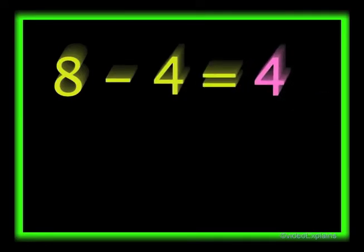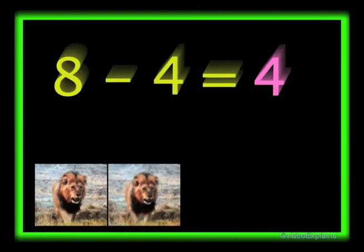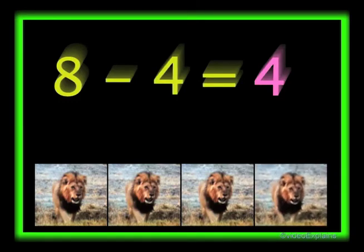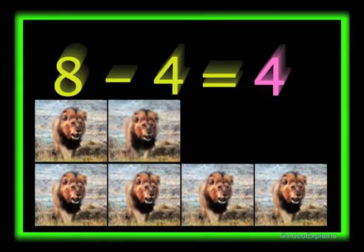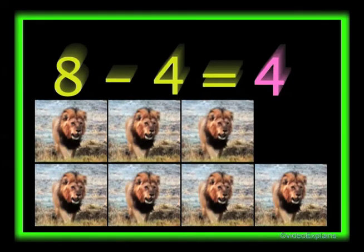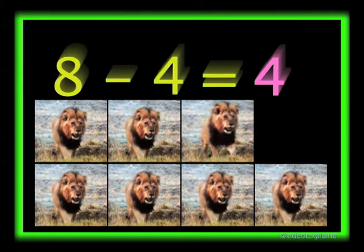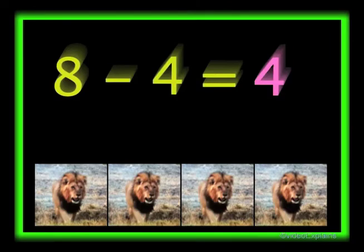Eight minus four equals four. There are eight lines: one, two, three, four, five, six, seven, and eight. Out of eight lines, if four lines walk away, then four lines will be left. One, two, three, four. So eight minus four equals four.